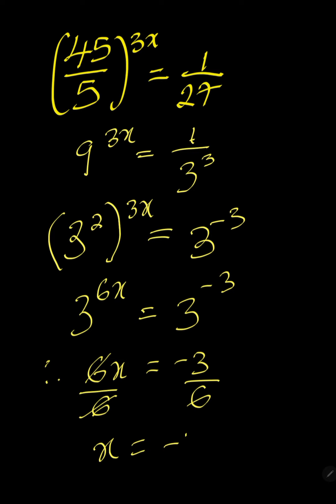This will cancel out, leaving us with x is minus 1 over 2, because if you divide this by 3, you get minus 1. Divide by 3, you get 2. Therefore, the solution to this problem is minus 1 over 2.